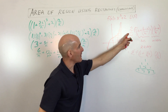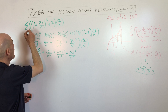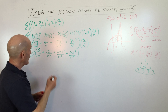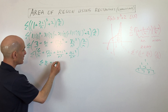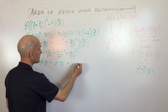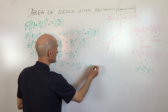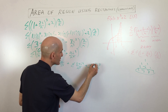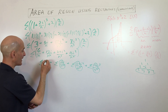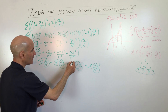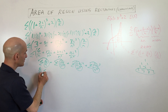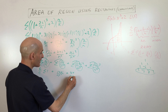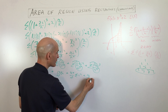These are all being summed from i equals one to N. We're going to split these into separate summations: the sum of six over N, plus the sum of 12i over N squared, plus the sum of 24i squared over N cubed, plus the sum of 16i cubed over N to the fourth. You can bring the constant coefficients in front of each summation — six over N, twelve over N squared times the sum of i, twenty-four over N cubed times the sum of i squared, and sixteen over N to the fourth times the sum of i cubed.